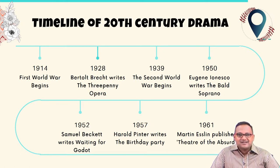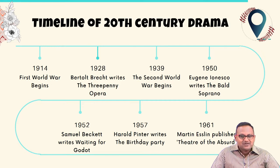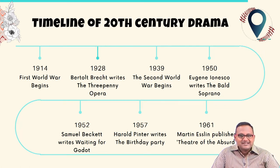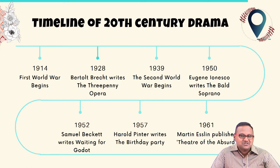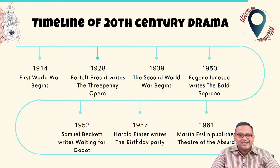In 1928, less than two decades later, we have Bertolt Brecht, an exemplary playwright, who writes the Threepenny Opera - inaugurating a new school of drama called Epic Theatre. Then in 1939, the beginning of the Second World War, also very important for similar reasons. It brings about epochal transitions in human society and human consciousness - humanity's outlook towards polity, administration, culture, existence - everything changes. It's the greatest geopolitical shift taking place through these wars.